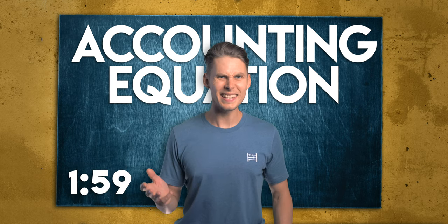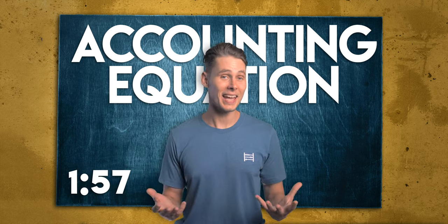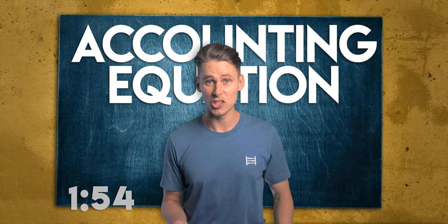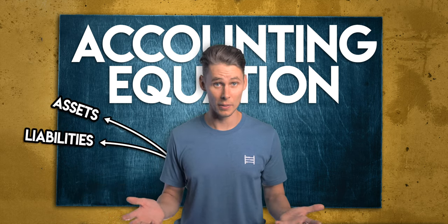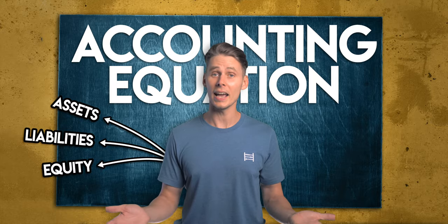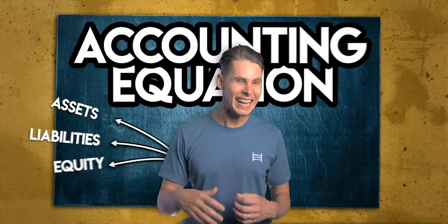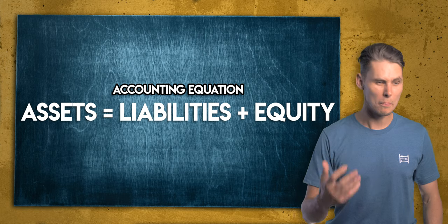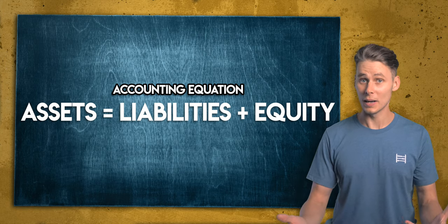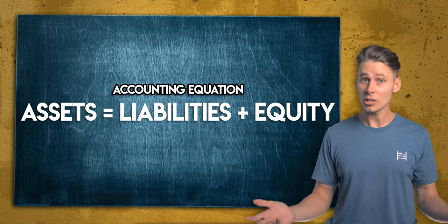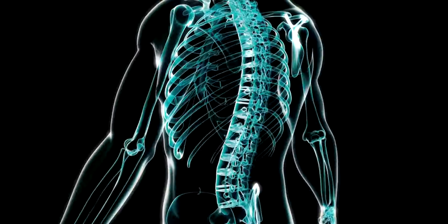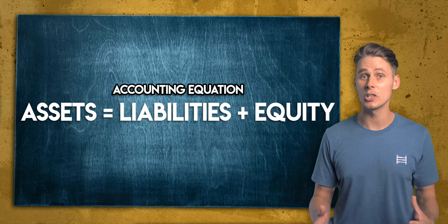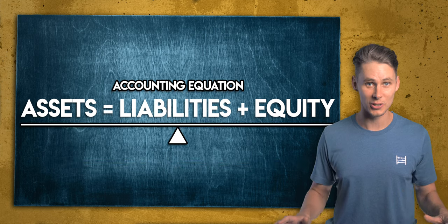What is the accounting equation? The accounting equation is a formula that sets out the relationship between assets, liabilities and equity. It says that at any given moment a business's assets must equal its liabilities plus equity. You could call this the backbone of bookkeeping because the accounting equation always has to balance.